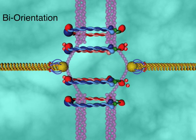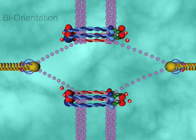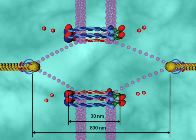This only happens when the chromosome is in mono-orientation. When correctly bi-oriented, the tension is generated and the kinetochores are stretched 800 nanometers.